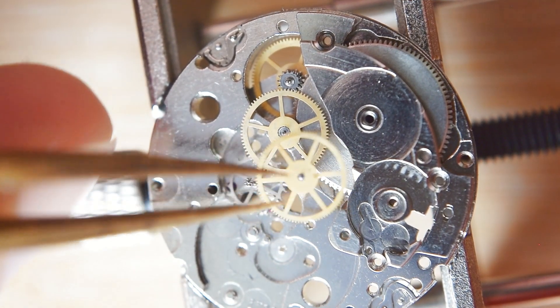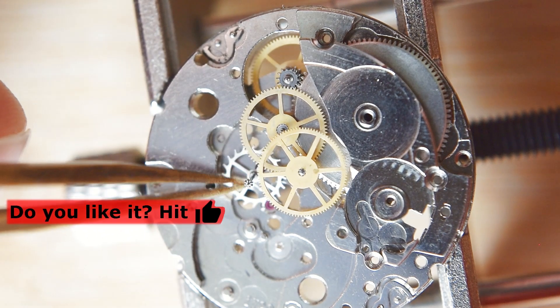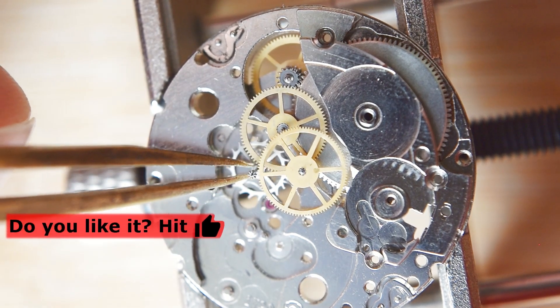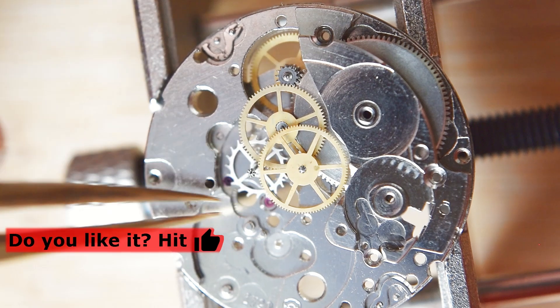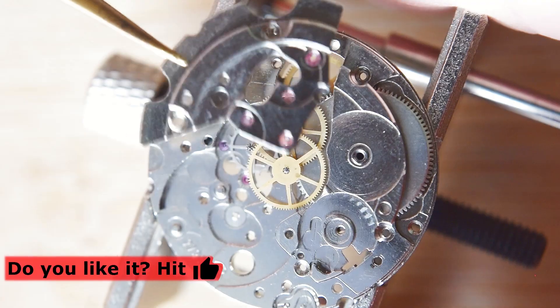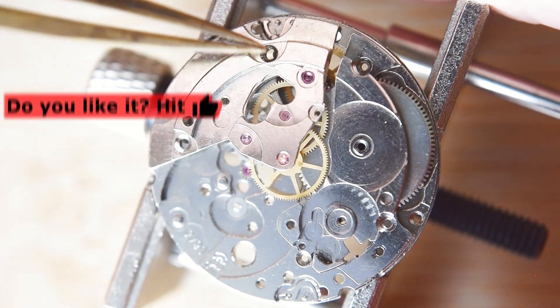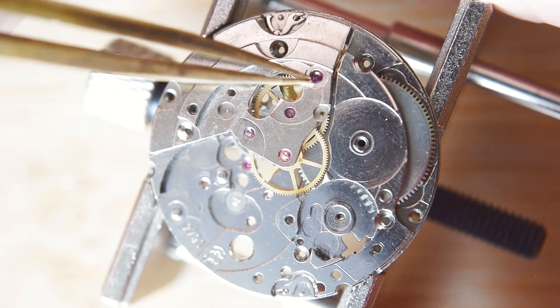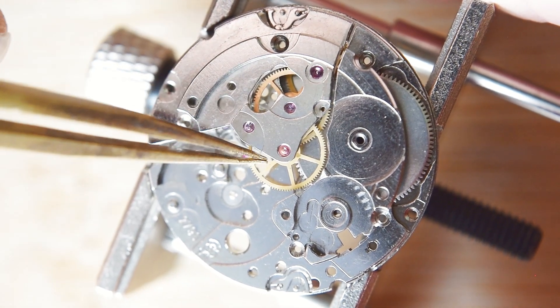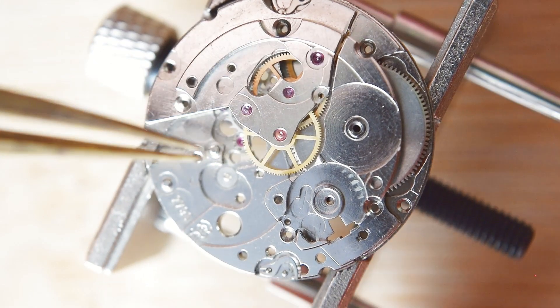Now I am assembling the train wheels. This ETA movement goes to a watch brand called Sandoz. In this video I will cover only the assembly of this movement. Later, because I have to also replace the winding stem, I'll make a video about adjusting the winding stem.